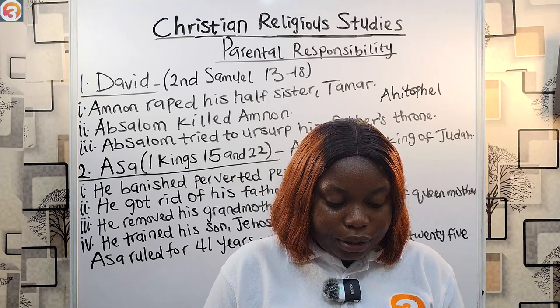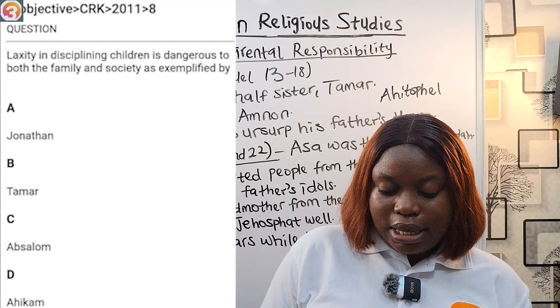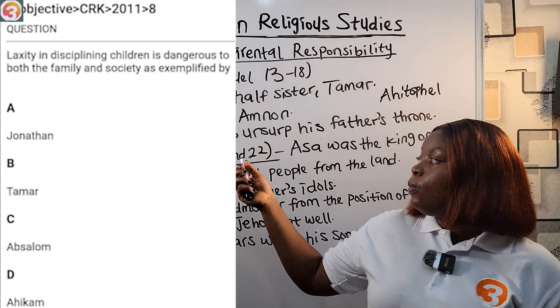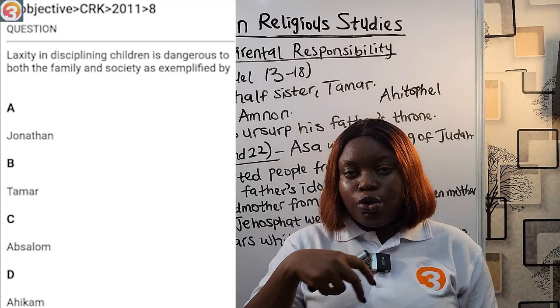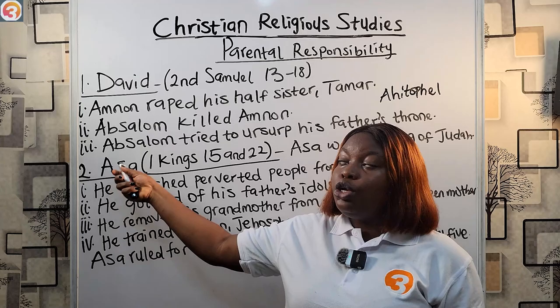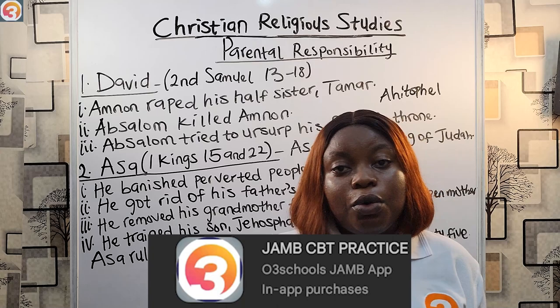Here's a question from 2011: 'Laxity in disciplining children is dangerous to both the family and society, as exemplified by: A) Jonathan, B) Tamar, C) Absalom, D) Ahikam.' The answer is C — Absalom. It's dangerous to both family and society because not only did Absalom kill his brother, he also tried to usurp his father's throne, leading to a war that caused many deaths beyond the family. That's it for parental responsibility — thank you for watching, like the video, leave questions in the comments, and subscribe so you don't miss new content.